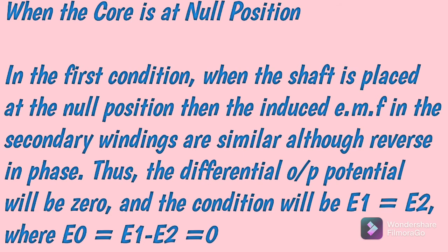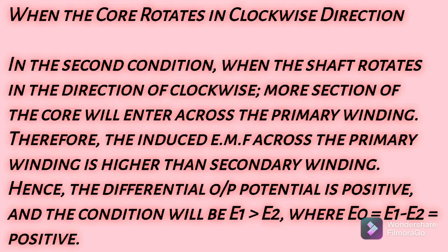In the first condition, when the shaft is placed at the null position, then the induced EMF in the secondary windings are very similar although reverse in phase. Thus the differential output potential will be zero, and the condition will be E1 equals E2, where E0 equals E1 minus E2 equals zero.